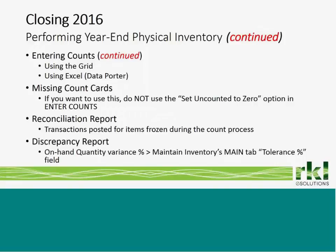Once that step is completed, run the reconciliation report, which shows any transactions posted since items were frozen — shipments, receipts of goods, or inventory transactions that may have been posted while you were performing the physical count. Then there's the discrepancy report, which shows items where the on-hand quantity variance percent is greater than the tolerance percent stored in the Maintain Inventory tolerance percent field on the main tab. For each inventory item in a warehouse record, you can define an acceptable tolerance level; if the variance between the count and the frozen quantity exceeds that tolerance, it appears on the discrepancy report.